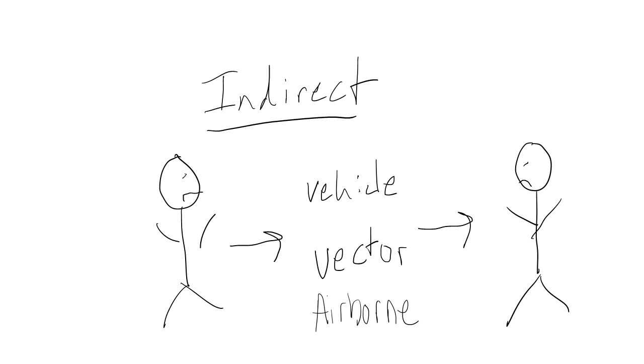There are three types of indirect infectious disease transmission: airborne, vehicle, and vector.